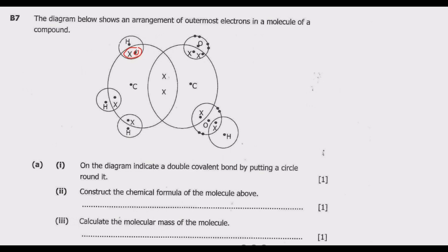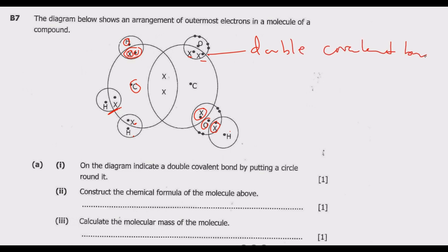Similarly, the bond between hydrogen and carbon is a single bond, as is the next one. Then we have a one-one donation by oxygen, and also one donation each by oxygen and hydrogen — so those are all single bonds. But in here we are seeing two electron pairs shared, so this is the double covalent bond which we are required to identify.